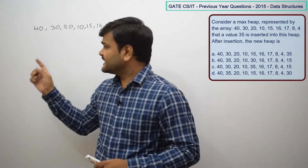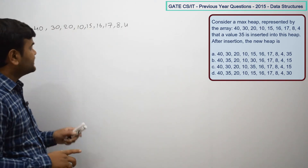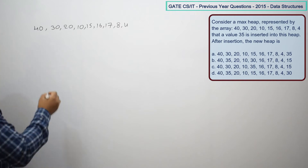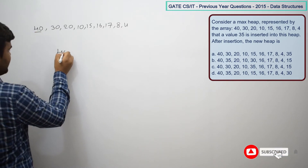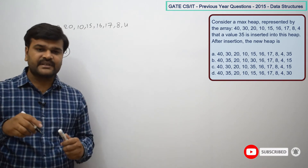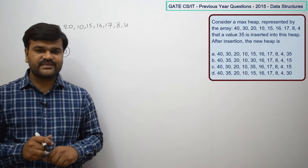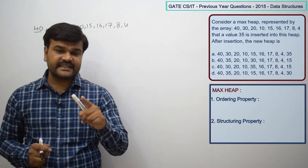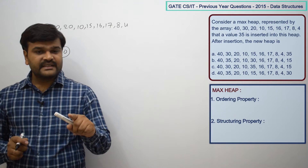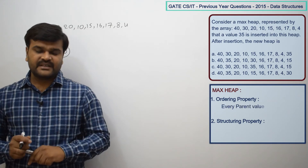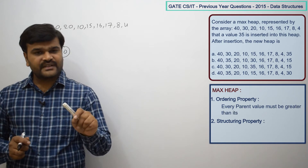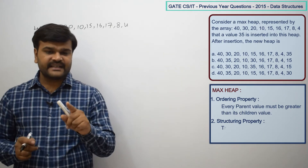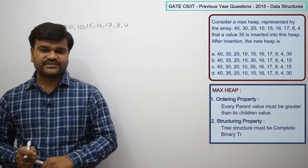From the given elements, let us first construct the max heap tree structure. The max heap definition requires two properties: ordering property and structuring property. For ordering property in a max heap, every node must be greater than its children. For structuring property, the entire tree must follow a complete binary tree structure.